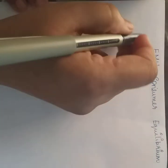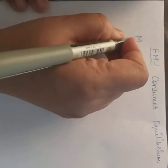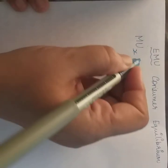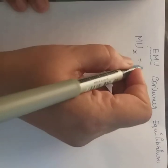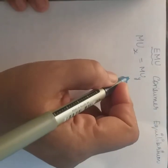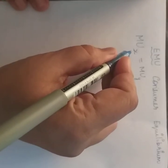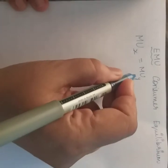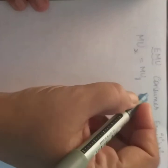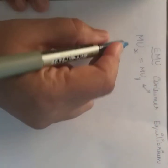In the earlier video, I explained that the marginal utility of product X should be equated to the marginal utility of product Y. In other words, the marginal utility derived from X commodity should be equal to the marginal utility derived from Y commodity for the consumer to attain equilibrium.